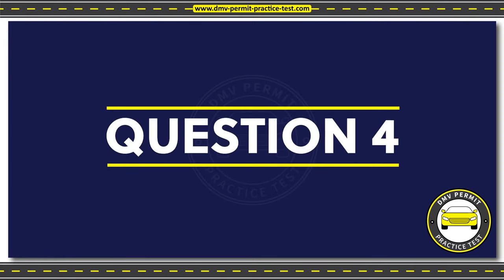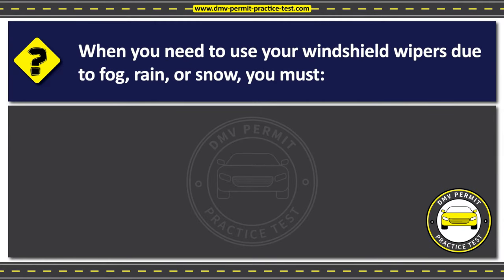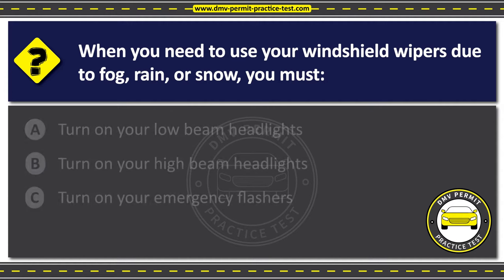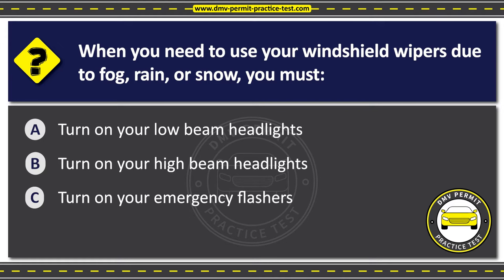Question 4. When you need to use your windshield wipers due to fog, rain, or snow, you must: Option A: Turn on your low beam headlights. Option B: Turn on your high beam headlights. Option C: Turn on your emergency flashers. The correct answer is Option A: Turn on your low beam headlights. Turning on your low beam headlights during adverse weather conditions can improve your visibility, help other drivers see you better, ensure compliance with legal requirements, and reduce the risk of accidents.